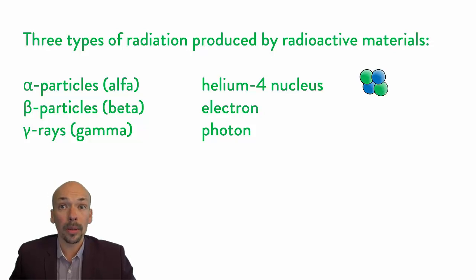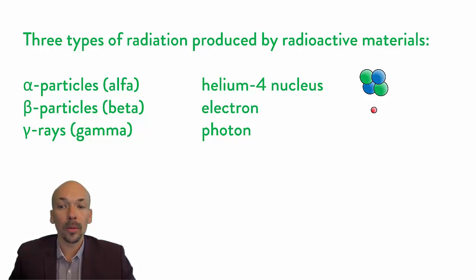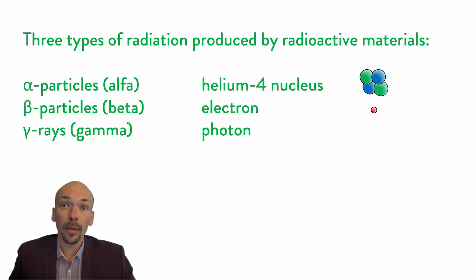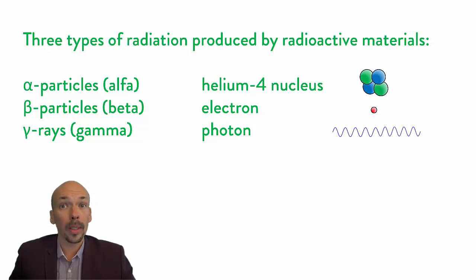The alpha particle is the largest and the heaviest — it has two protons and two neutrons with no electrons around it. The beta particle is a lot smaller; it's a small electron. And the gamma ray is even smaller. However, it doesn't have any mass — it's just a photon, an energy package which has a certain wavelength.